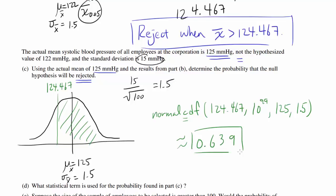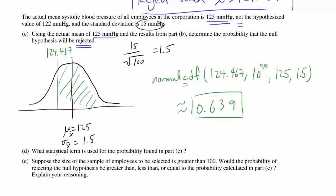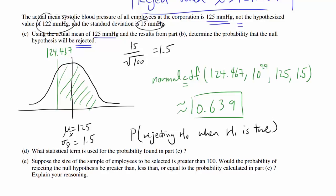That's the answer to part C. Part D asks: what statistical term is used for the probability found in part C? We found the probability of rejecting H0 when H1 is true — when the actual mean was greater than 122. The definition of this is power. You want the power to be large, because when H1 is true and H0 is wrong, you want to reject H0. So the answer to part D is power.